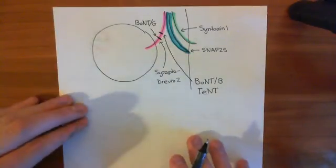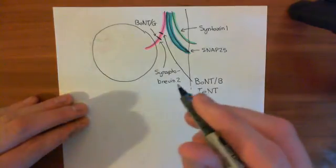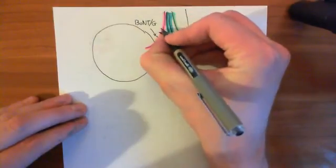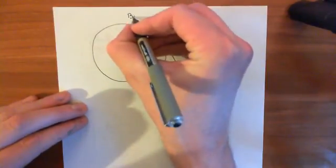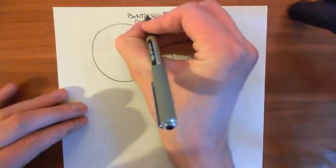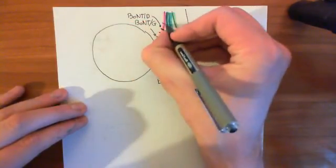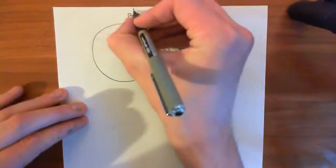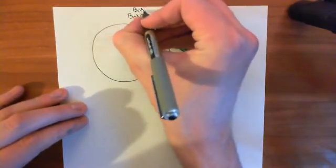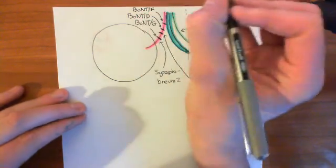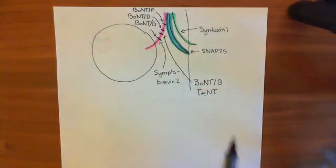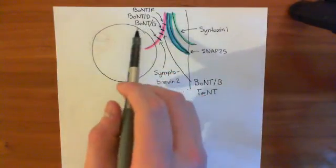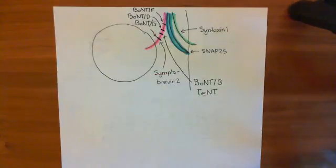Okay, so next one up from that is the botulinum neurotoxin D. So this is the cutting site of the botulinum neurotoxin D. And then finally, upstream of that, is the cutting site of the botulinum neurotoxin F. So all of these botulinum toxins target synaptobrevin, botulinum neurotoxin B, botulinum neurotoxin G, botulinum neurotoxin D, and botulinum neurotoxin F.